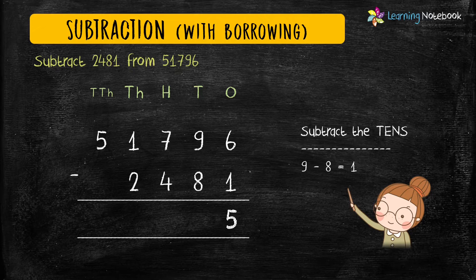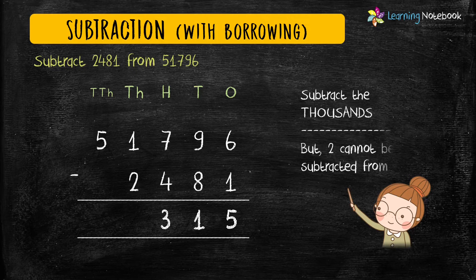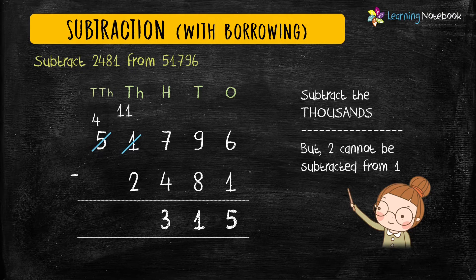Subtract the digits at the tens place: 9 minus 8 equals 1. Next, subtract the digits at the hundreds place: 7 minus 4 equals 3. Now let's move to the thousands place. But 2 cannot be subtracted from 1, so we will borrow from 5. Therefore 5 becomes 4 and 1 becomes 11. Now we can easily subtract 2 from 11, which is 9.